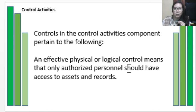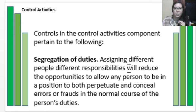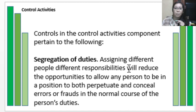An effective physical or logical control means that only authorized personnel should have access to assets and records — for example, through passwords or login requirements. Another key control is segregation of duties, which involves assigning different people to different responsibilities to reduce the opportunity for any one person to both perpetrate and conceal errors or fraud in the normal course of their duties.